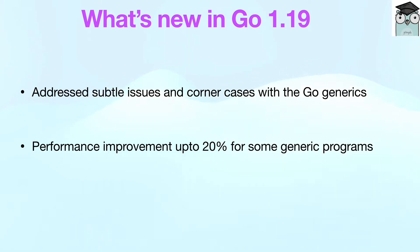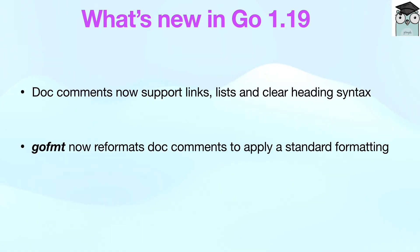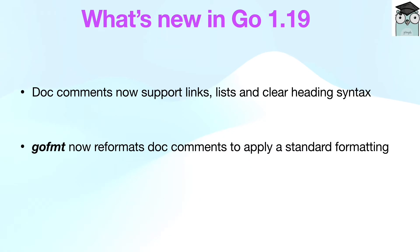There are important performance enhancements for some generic programs — up to 20 percent performance improvement. Doc comments now support links, lists, and clearer heading syntax. This change helps users write clearer, more navigable documents, especially in packages with large APIs. As part of this change, go fmt now reformats doc comments to apply standard formatting to uses of these features.